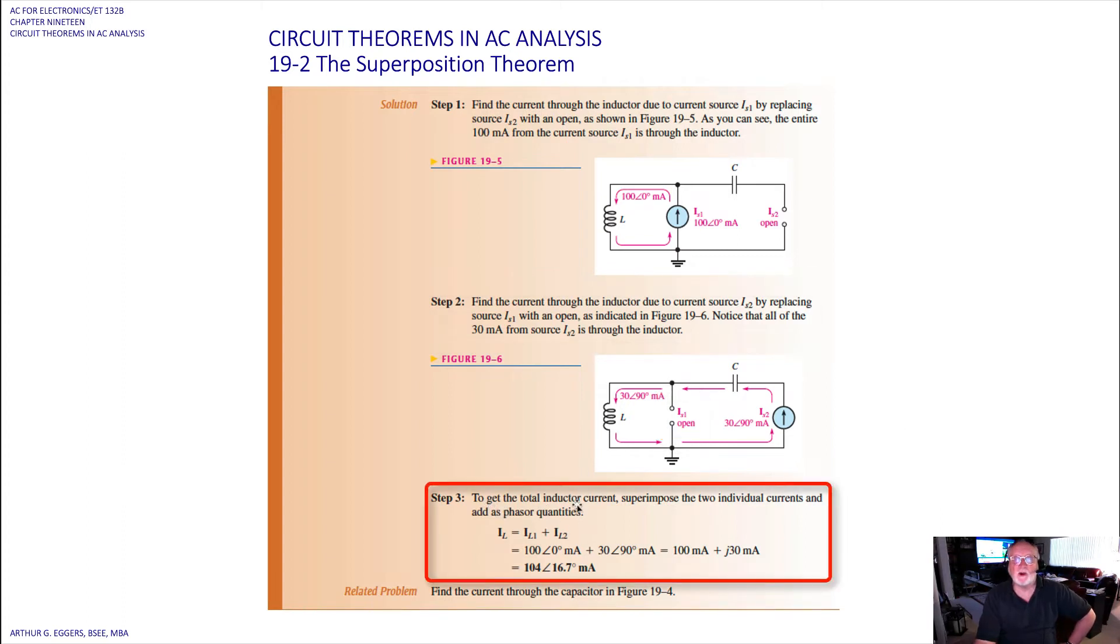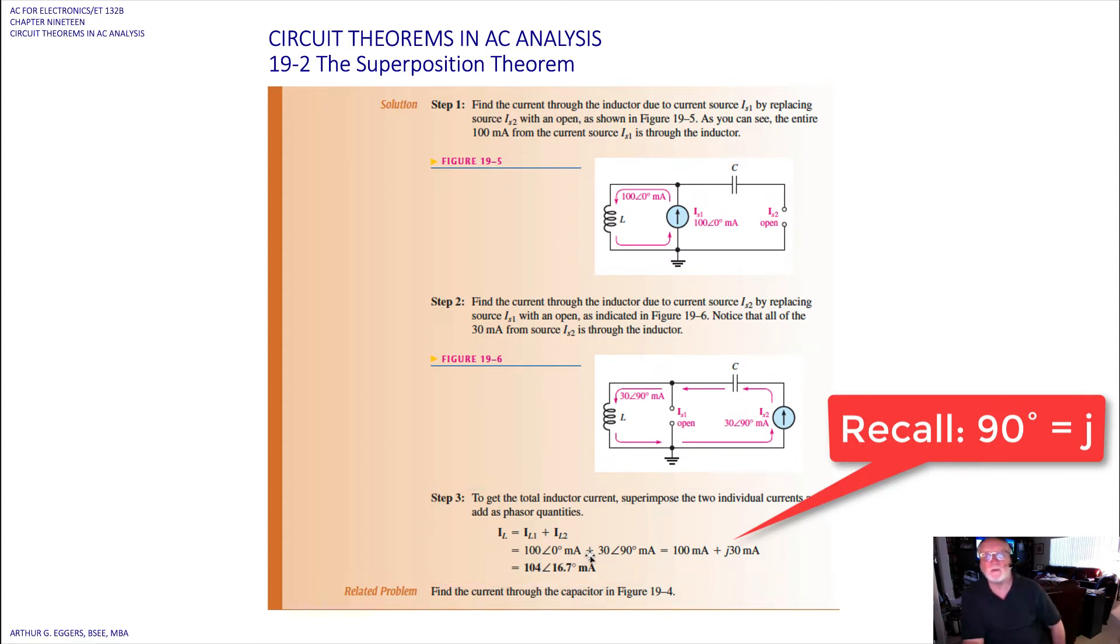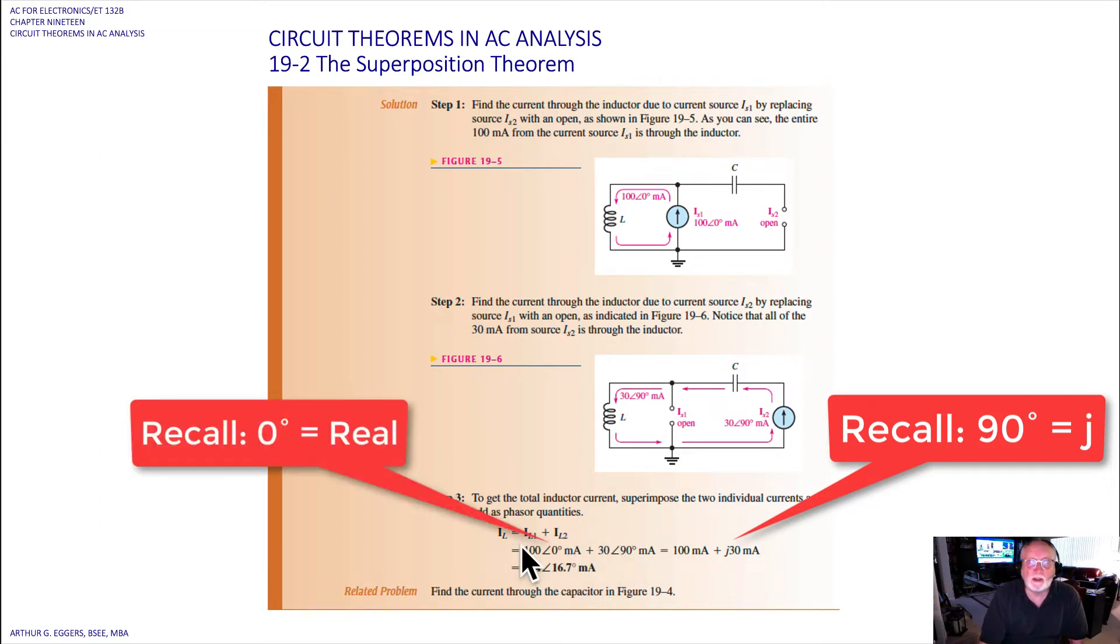Step three: to get the total inductor current, superimpose the two individual currents and add the phasers. So we have two values given to us as polar. So the current through inductor one, the current through inductor two is the current of each of the sources. So 100 at 0 degrees in milliamps plus 30 at 90 degrees in milliamps. So what do we do? Well, we can't just combine these together.